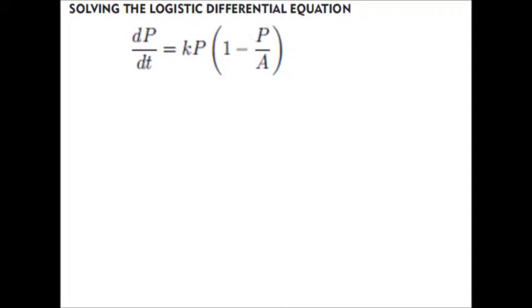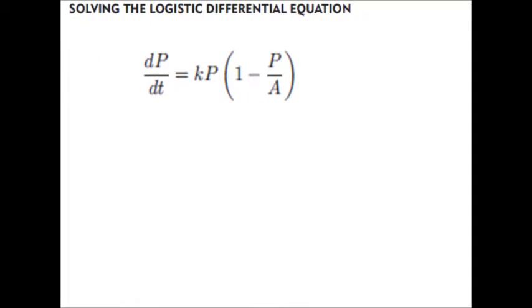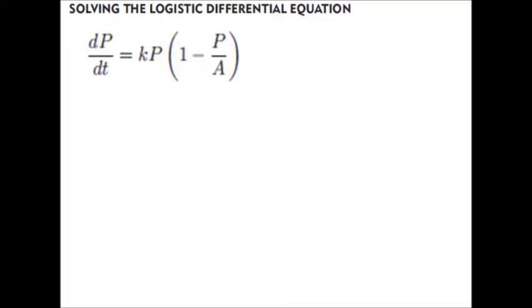Now, what we have here is the differential equation which will become our logistic function. Now, to show that, I'm first of all going to change the term in brackets into a single fraction. So, common denominator is A, and I end up with A take P. Next, we need to remember that this is a separable equation. The P term needs to be across here on the left-hand side.